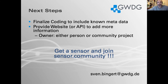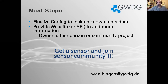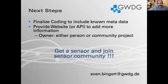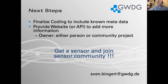The next steps are to finalize the code to get more metadata into the PIDs, and we need to provide an API or website to get more information from the actual owners of the instruments — asking what type of sensor they used, who the owner is, and so on. If possible we'll include the owner in the metadata; if not, we can say it's owned by the community project. There are a few open questions about the metadata types to add. The next step is also to invite you all to get a sensor and join the community project to increase sensors, data, and countries.